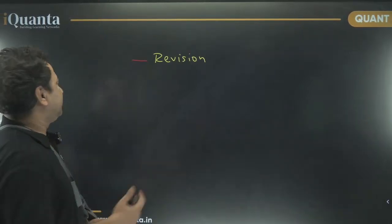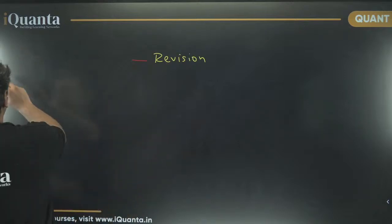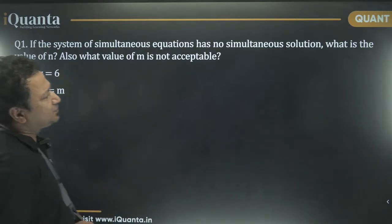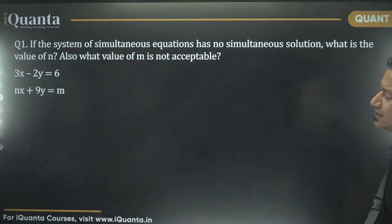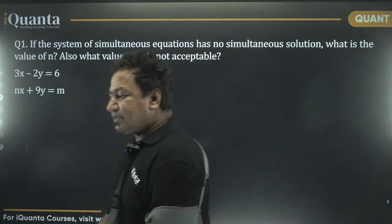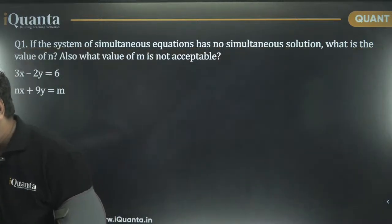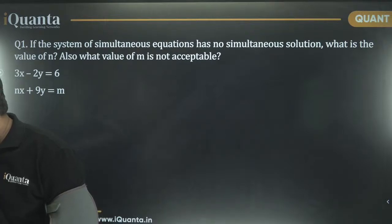Through different questions and without much ado, without spending more time, let us go to the questions directly. So we have this question, the first question which says, if the system of simultaneous equations has no simultaneous solution, what is the value of n? Also what value of m is not acceptable? So this is the first unit, first chapter. And the first chapter is linear equations, right?